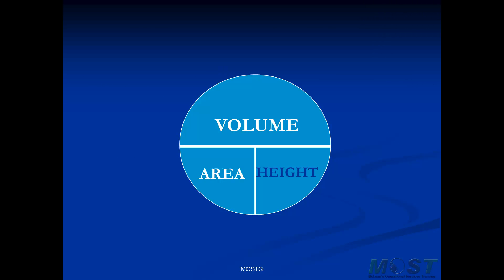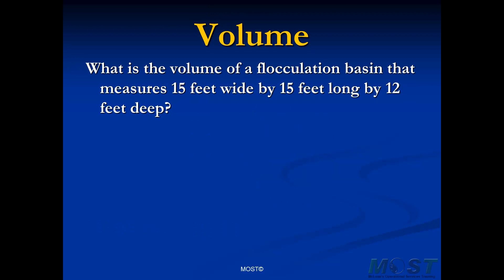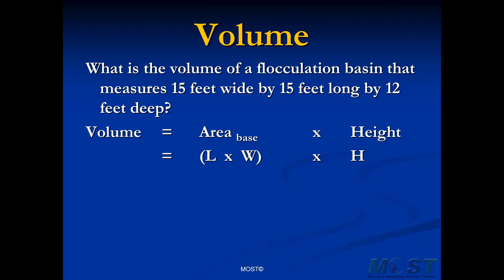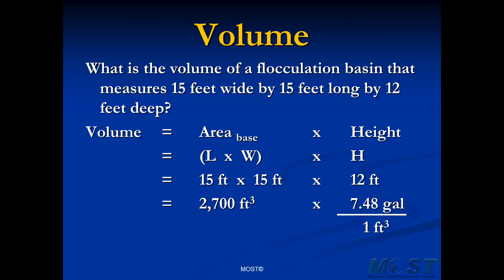So let's find that volume. We're going to use another one of our five MOST formulas: volume equals the area of the base multiplied by the height. For our flocculation basin, the area of the base is length times width, multiplied by the height or depth. That's 15 feet by 15 feet times a depth of 12 feet, giving a volume of 2,700 cubic feet. However, we want to express that volume in gallons for compatible units, so we use our conversion factor of 7.48, and our volume becomes 20,196 gallons.